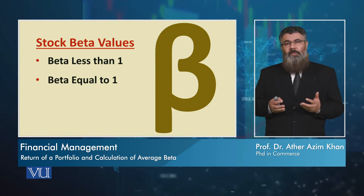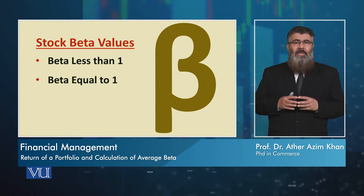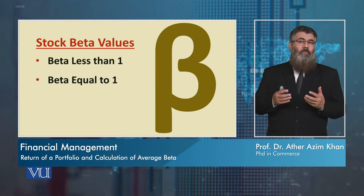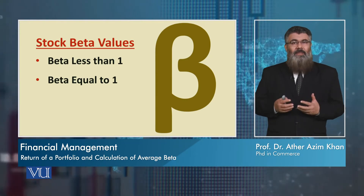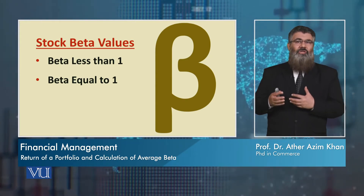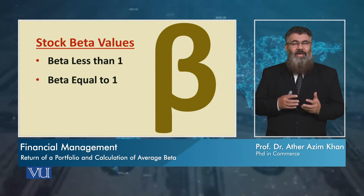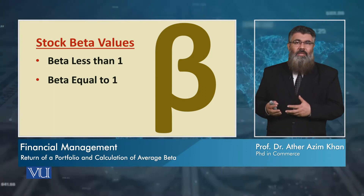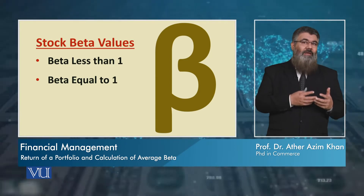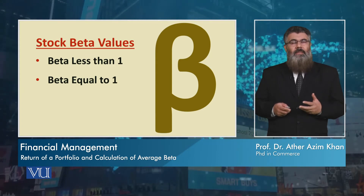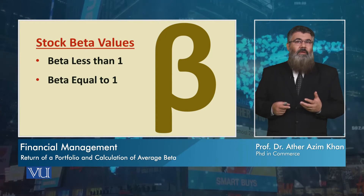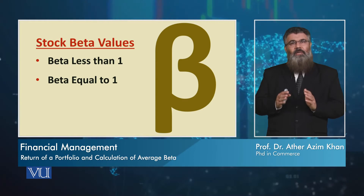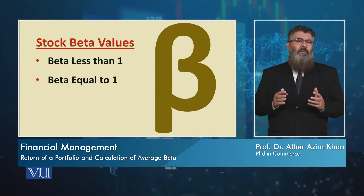There is also the possibility — although very rare — that a stock has a beta exactly equal to 1, matching the market beta. In that case, the risk and return of that stock will exactly equal the market's risk and return. As mentioned, this is a very rare phenomenon.